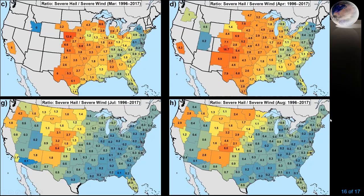Looking at four individual months — March and April on top, July and August on the bottom — we see very large ratios over a large part of the central and eastern United States in spring. Even in the east, where annual averages are around 0.5, spring ratios exceed one, meaning more hail than wind. In July and August, ratios drop below one — even to around 0.5 — in the southern and central U.S. The seasonality is very clear.